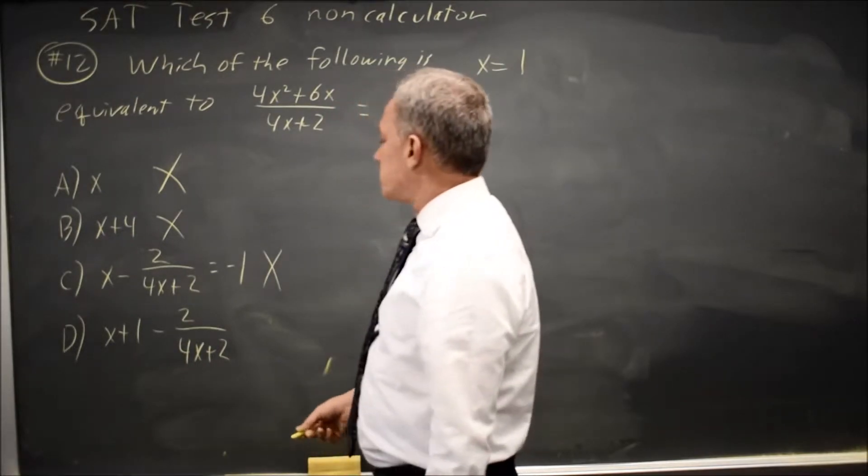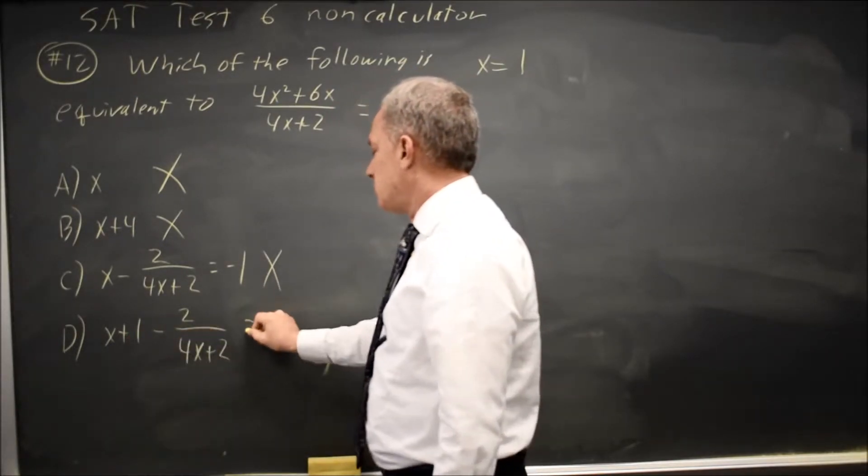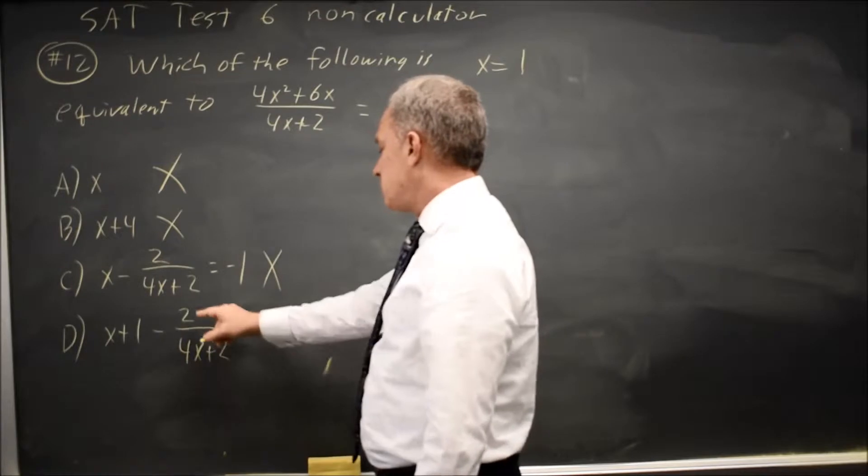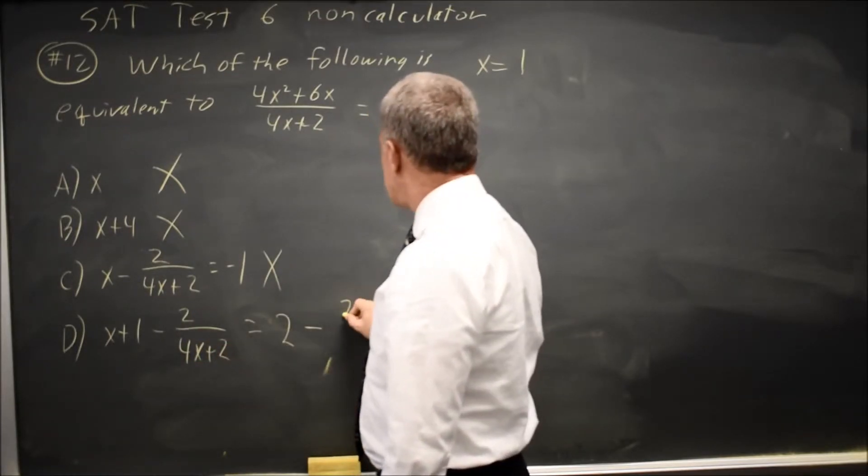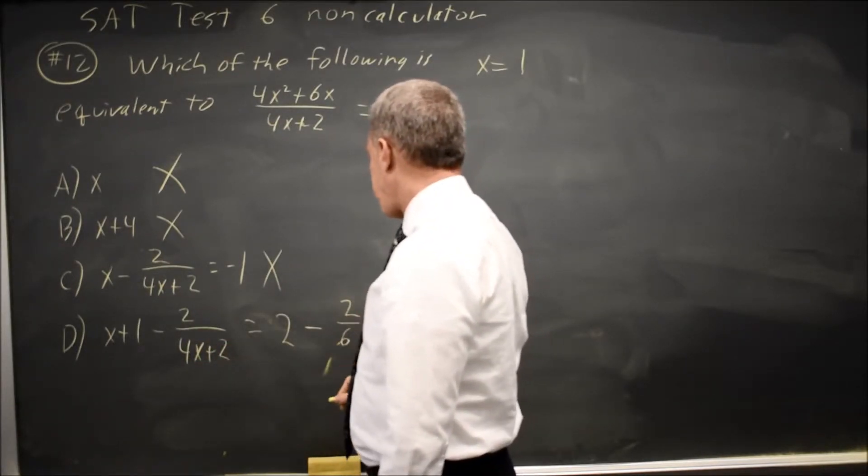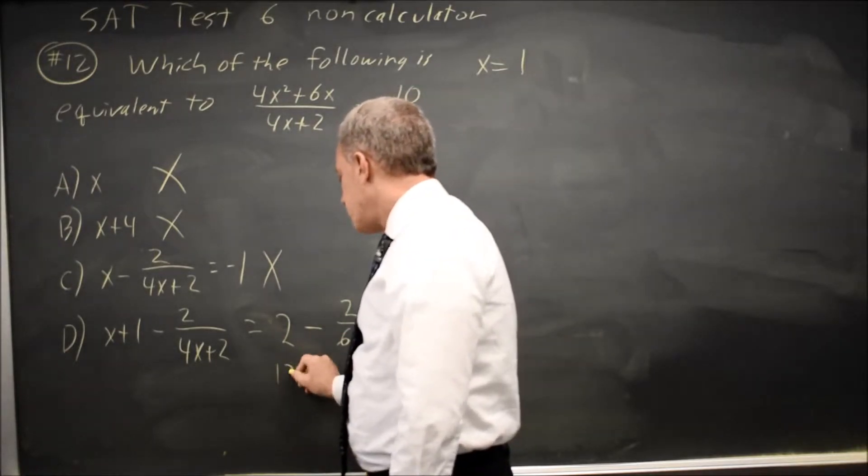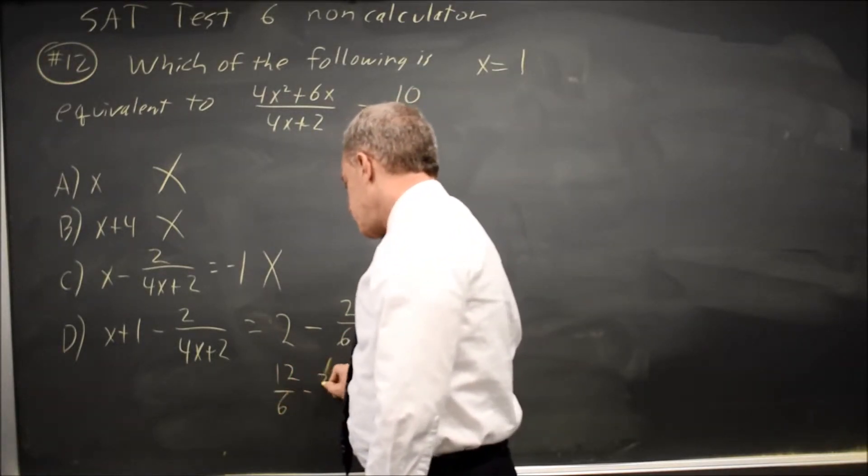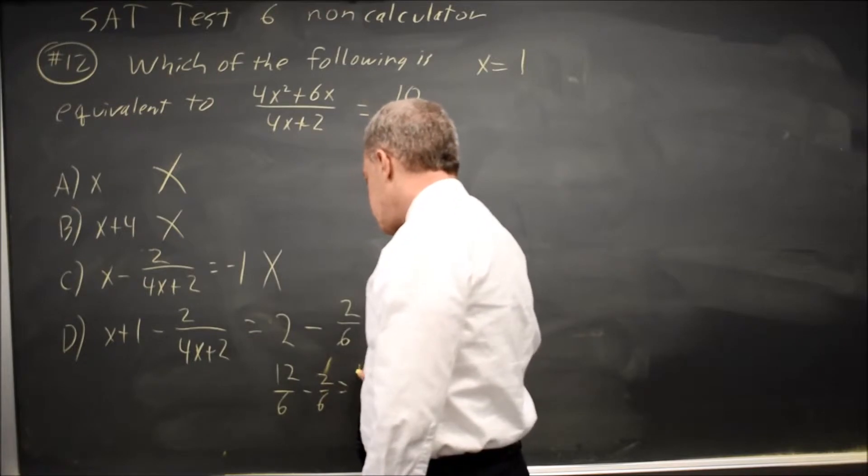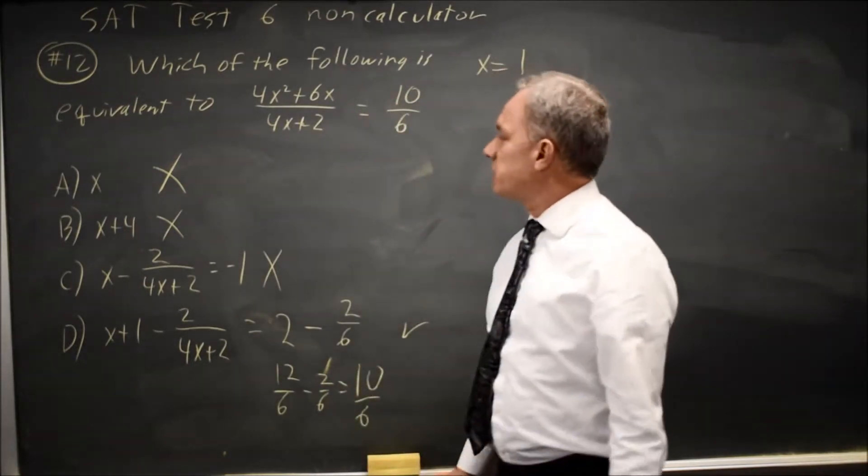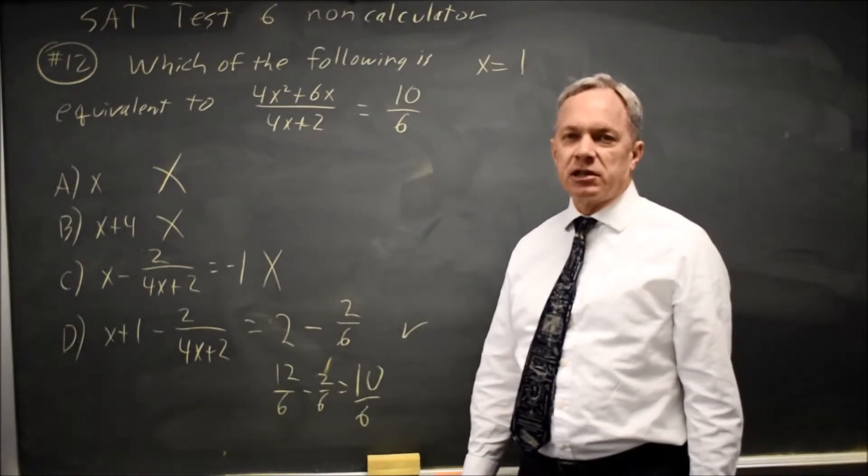At x equals 1, choice D is 1 plus 1 is 2, minus 2 over 4 plus 2 is minus 2 over 6. So that's the correct answer because they match if both x equals 0 and x equals 1.